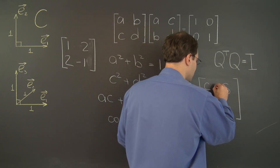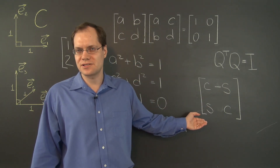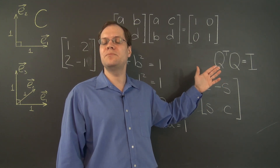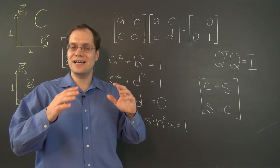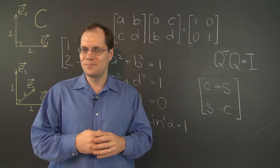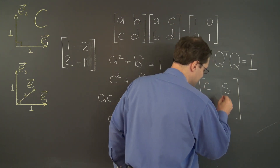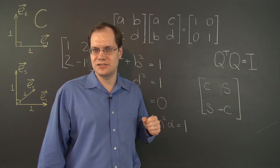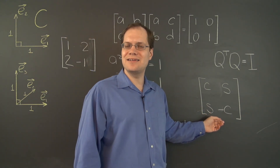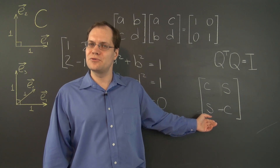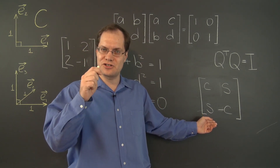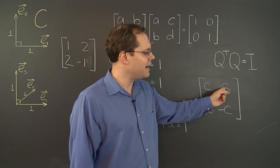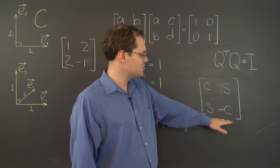If we put the minus sign in the upper position of the second column, we get the standard rotation matrix, whose determinant is cosine squared plus sine squared equals 1. If instead the minus sign goes in the lower position, this is not the standard rotation matrix — its determinant is minus cosine squared minus sine squared, which equals minus 1. So this second case is not a rotation matrix.